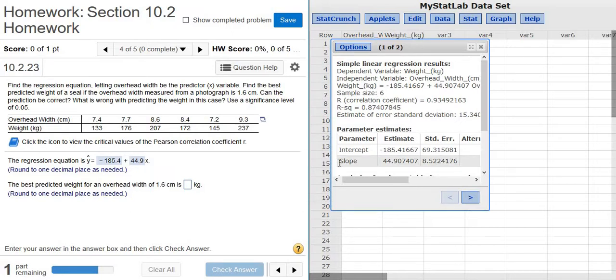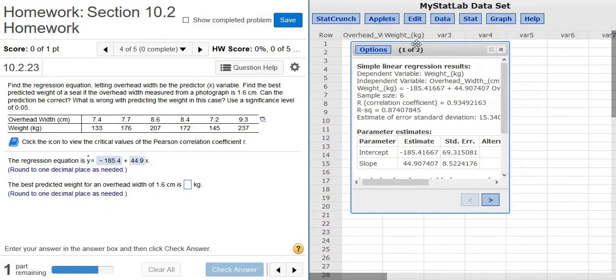What does that mean? That means that the r is bigger than the critical value. So if r is bigger than the number in this table, we have a straight line pattern, and then we use the line to make our prediction. If r is not bigger, then we don't have a straight line pattern, and the answer would be the mean of the weights. So let's check.